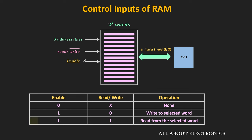Whenever the read-write control signal is equal to 1, the memory will perform the read operation, and based on the address on the address line, the memory will read the data from the specific word.